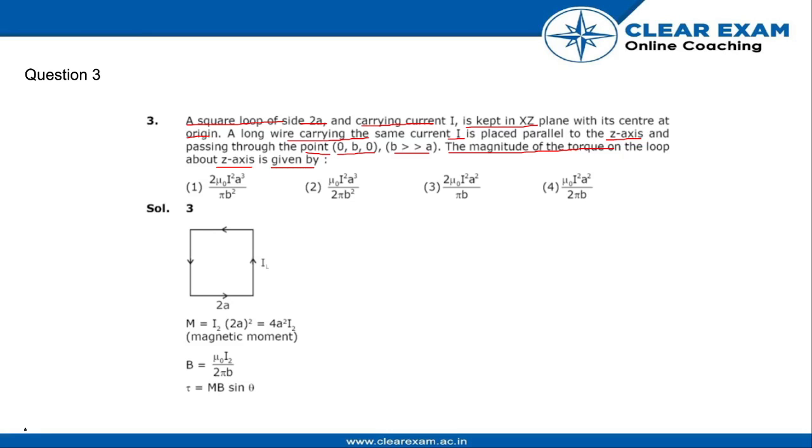We know that torque can be calculated by M B sin theta. So first we find the magnetic moment M which is current into length squared, or I into 2A squared, which is 4A² I.